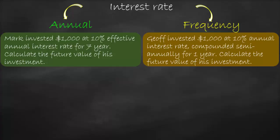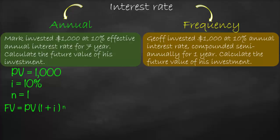For an annual rate example: Mark invested $1,000 at 10% effective annual rate for 1 year. Calculate the future value. Present value is $1,000, interest is 10%, n is 1 year. Future value = 1,000 × (1 + 10%)^1 = $1,100.